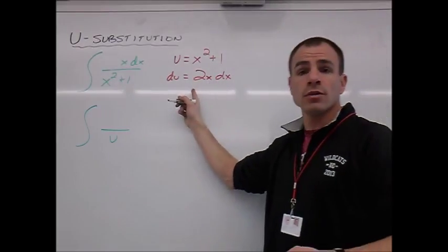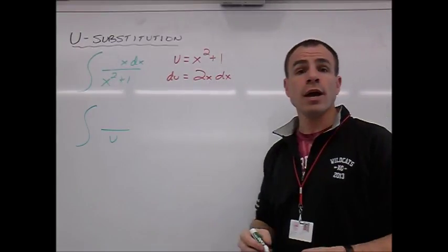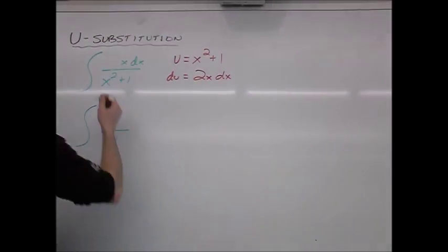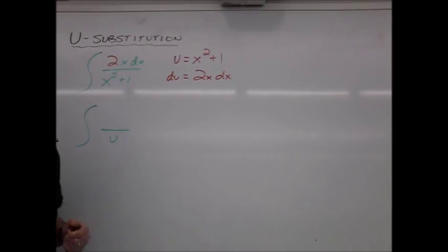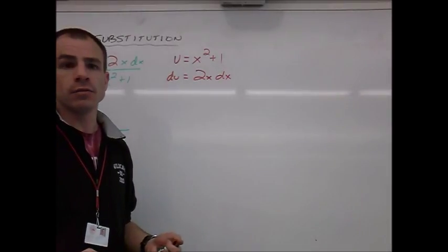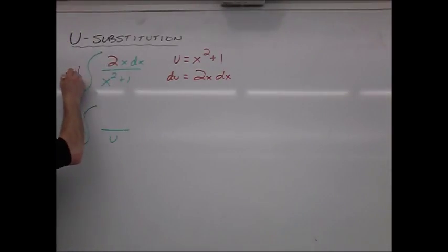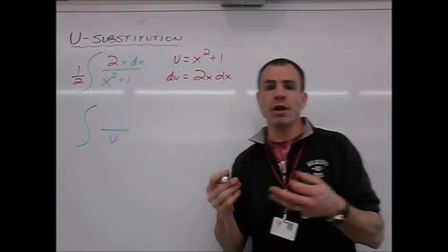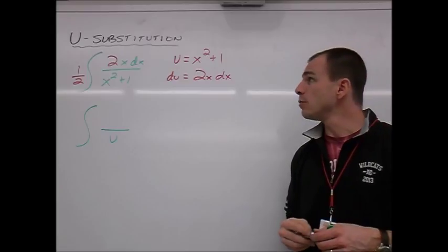du will come into our integrand only if we have 2x dx. So just like in our previous example, we need the 2. So let's get it in there. And if we put a 2 on the inside, what else do we have to do? Yeah, we have to have a 1 half on the outside. That way we've multiplied by 1, and we have not upset the value of our function.